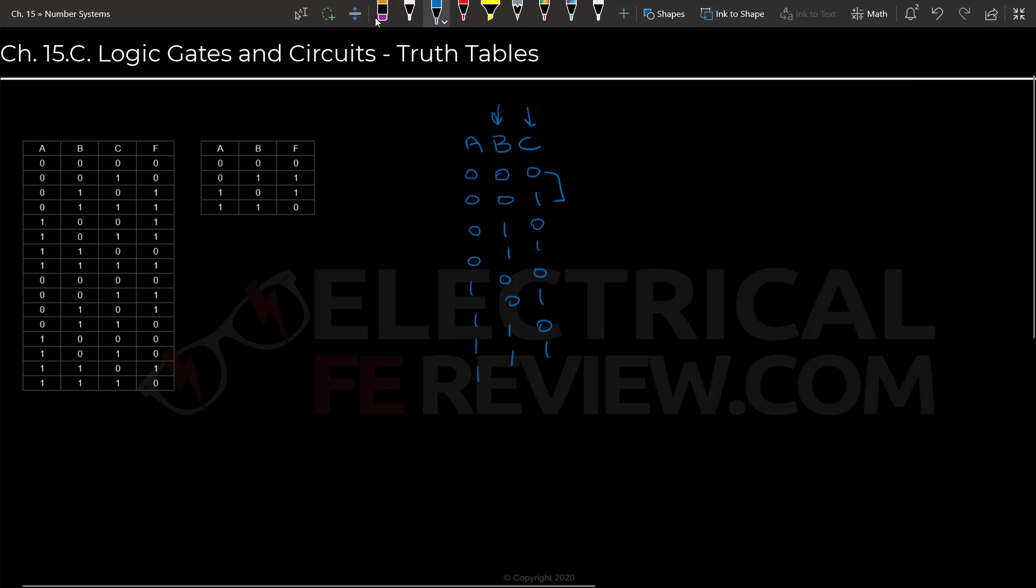And then once you have that, you're going to label the output. And for the output, it will either be asked that you determine the output, or they will just simply give you an output. So they could say, let's say a system needs both input B and C to be on. That means you're going to put a 1 here.